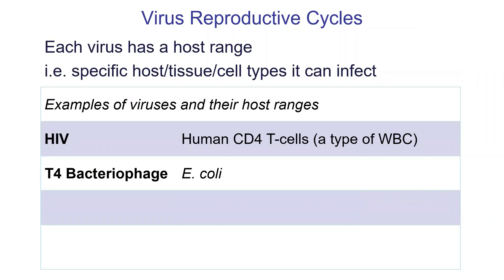Other viruses might be specific to other species. T4 bacteriophage, which we mentioned last day, infects E. coli. There are different viruses that infect different types of bacteria, and they all have their own names — often codes like T4, lambda phage. They've got lots of weird names for people who study bacteriophage.